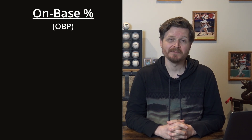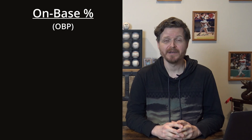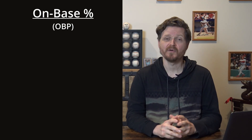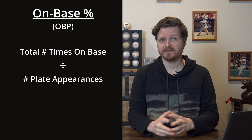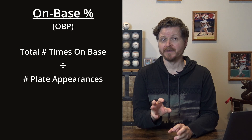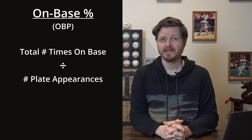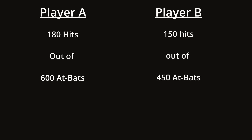That's where on base percentage comes in. It was invented somewhere around the 1940s–1950s, usually credited to Branch Rickey — the same man who signed Jackie Robinson to break the color barrier in Major League Baseball. Even though it was thought up that long ago, it only became widely used around the 1980s. It's calculated by taking the total number of times a player reaches base safely and dividing by the total number of plate appearances — and this is where the key difference between at bats and plate appearances comes into play.